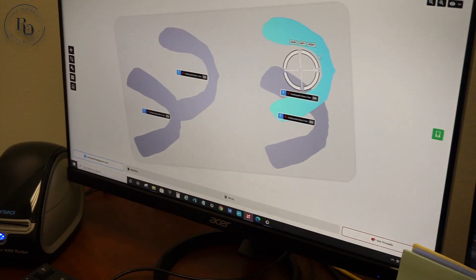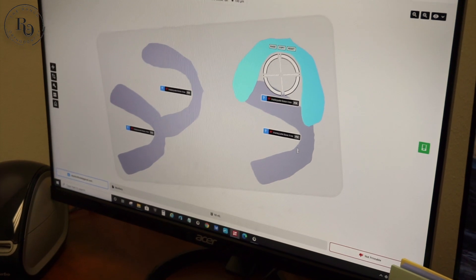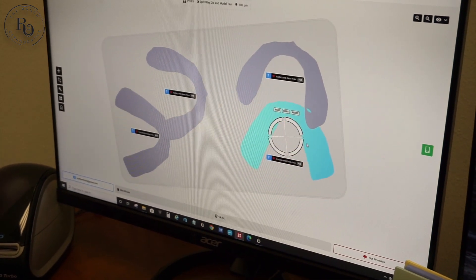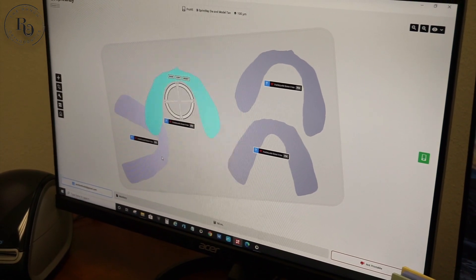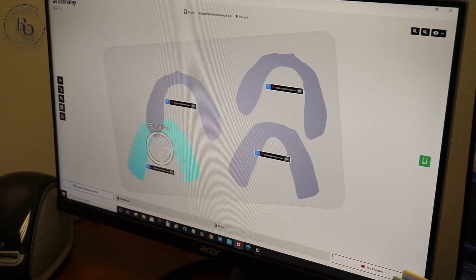When we line them up on the printer here we want to make sure that they're not touching each other. These are all going to be printed individually so I'm just lining them up to make sure that they're not going to be stuck together when we're done.